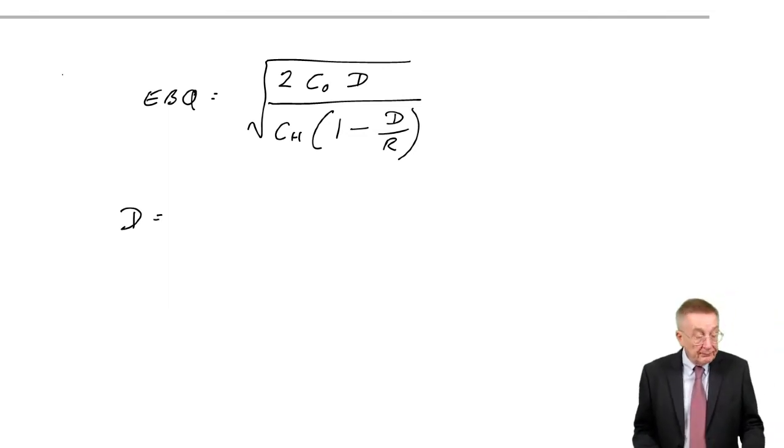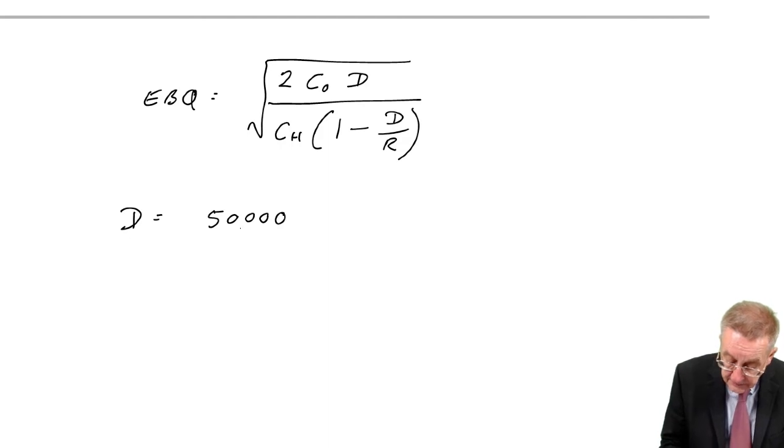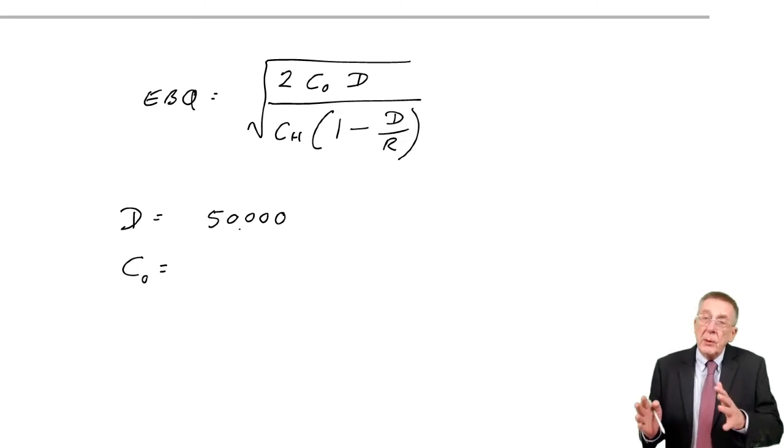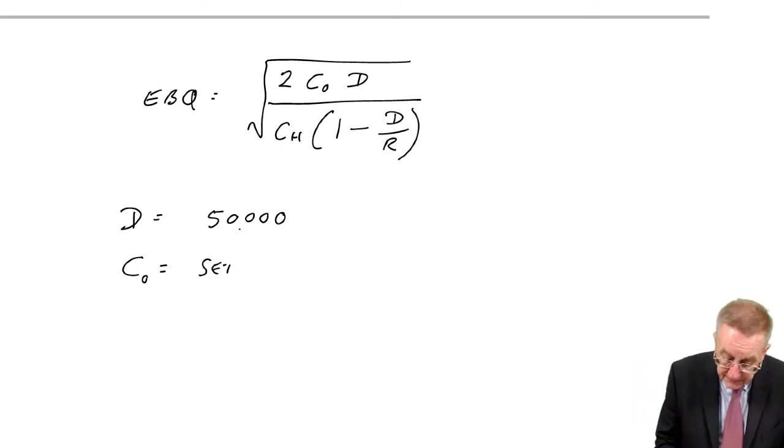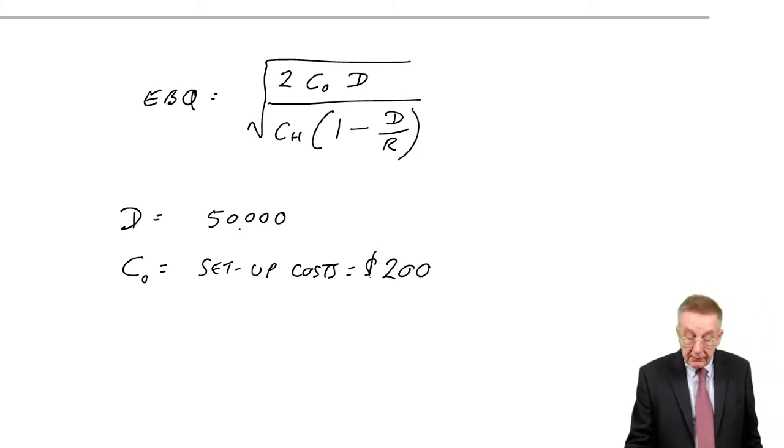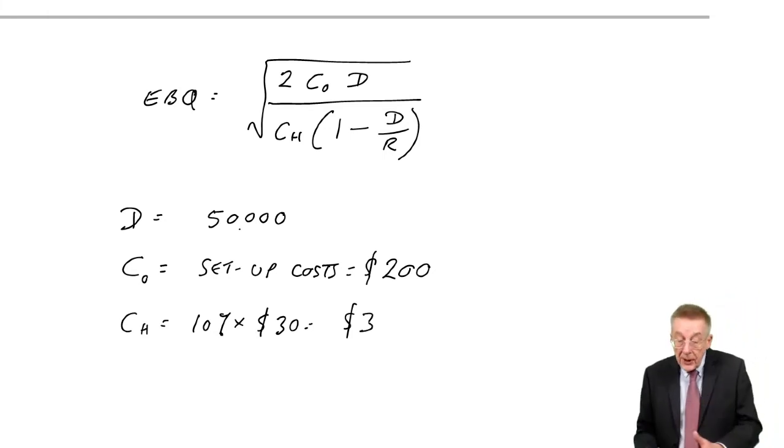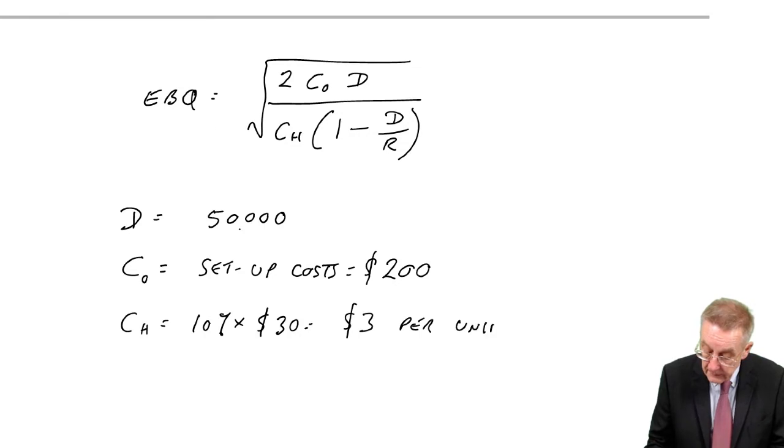The symbols: D is the total demand. As normal here, 50,000 units a year. C0, it was the order cost before. Here, it's not really costs of ordering from our own factory. But the equivalent is the cost of setting up the machines each time. Which here, it's $200 every time we place an order. CH is the holding cost, as normal. Here, it's 10% of inventory value. The cost of the units, $30 each. So, the holding cost, $3 per unit per year.